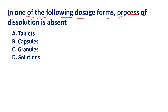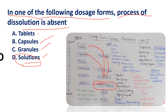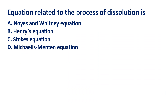Question: In which of the following dosage forms is the process of dissolution absent? Options: tablets, capsules, granules, solution. Tablets undergo disintegration then dissolution; capsules contain fine particles that must dissolve; granules also need to dissolve. However, when a drug is already in solution form, dissolution is not required. The answer is D — solution.